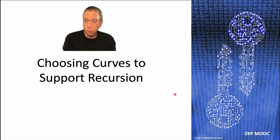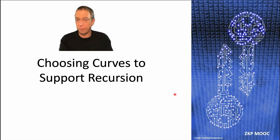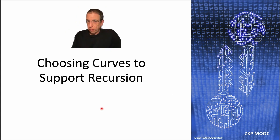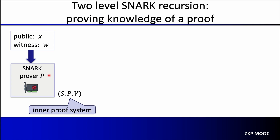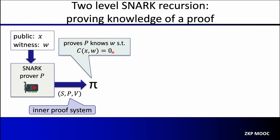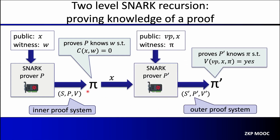In the next segment, we'll look at a technical problem that comes up when doing recursive proofs and how to solve it — specifically, how to choose curves that are especially well suited for recursive proofs. First, let's quickly review two-level SNARK recursion: the inner proof system SPV has a public statement X; prover P produces a proof pi proving knowledge of a valid witness W for X. The outer proof system uses pi as a witness and produces a proof pi prime proving that P' knows a proof accepted by the inner proof system's verifier.